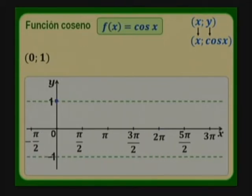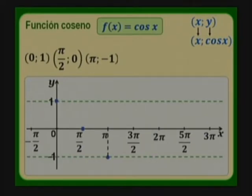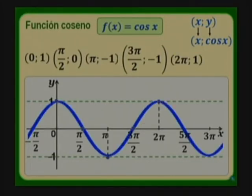El coseno de 0 es 1, sería un punto máximo. En última instancia, cuando queremos representar una función, sustituimos valores de su dominio, hallamos valores de su imagen y determinamos puntos. El coseno de 180 grados es menos 1, un punto mínimo. El coseno de 90 grados es 0, el coseno de 270 grados es menos 1, y el coseno de 360 grados es 1, coincide con el de 0 pues son coterminales.